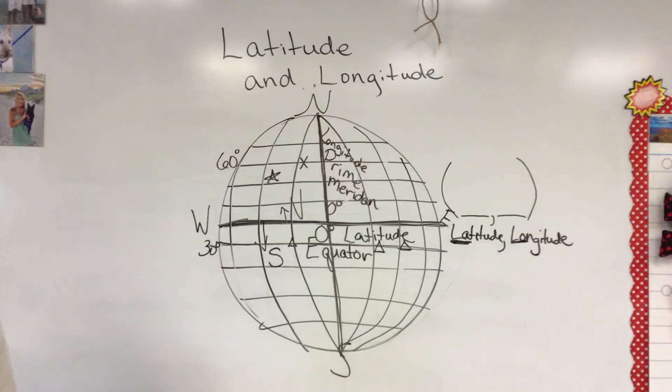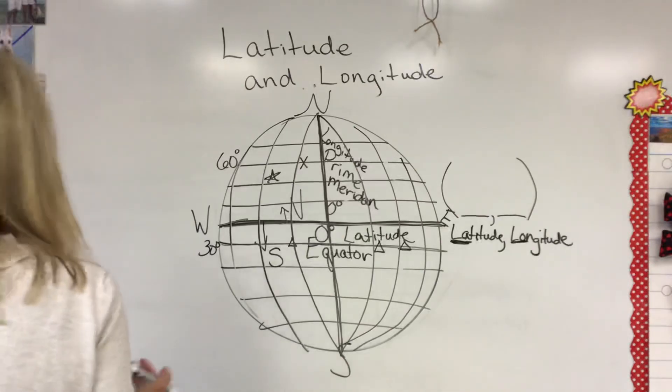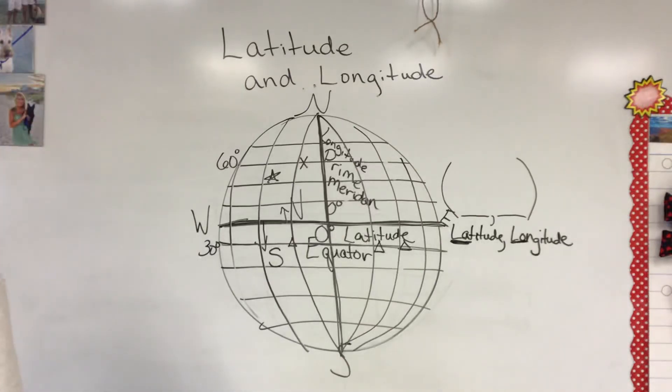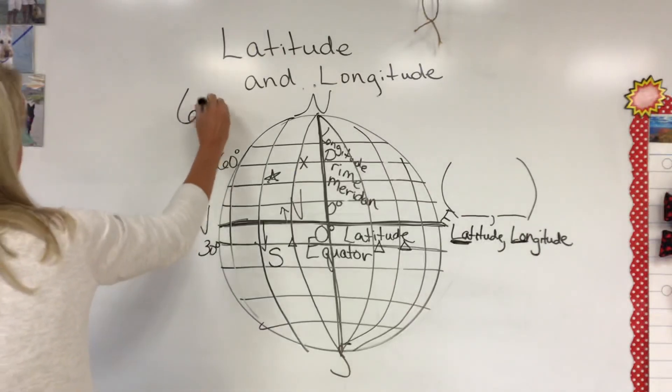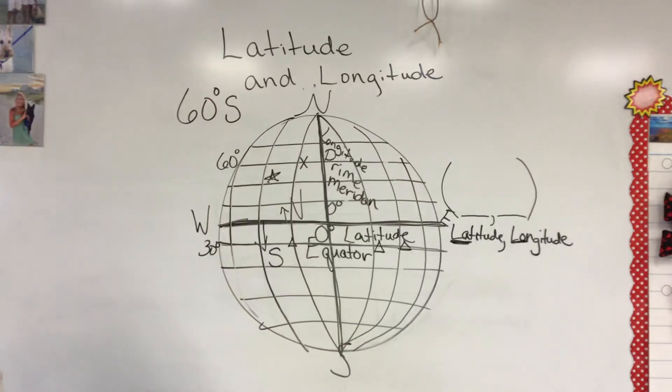Number five says how would you label the 60 degrees south latitude line. Well that question seems like it's almost too easy, but that's all they want you to do is how would you label 60 degrees south line. You're actually gonna write 60 degrees south, so S for south. Don't make it too hard, it's pretty simple.